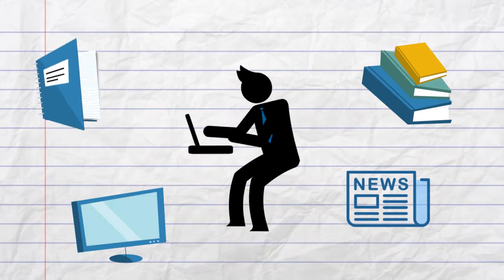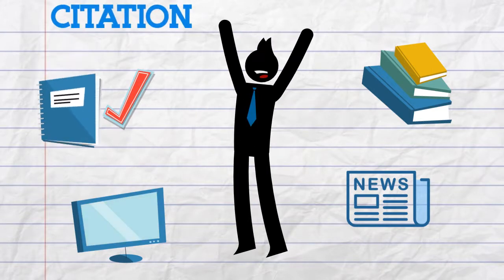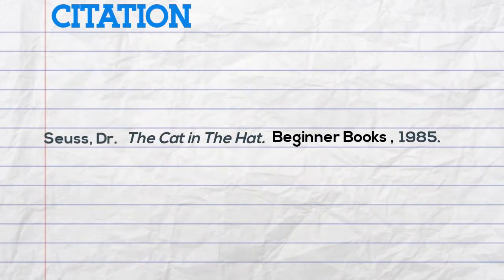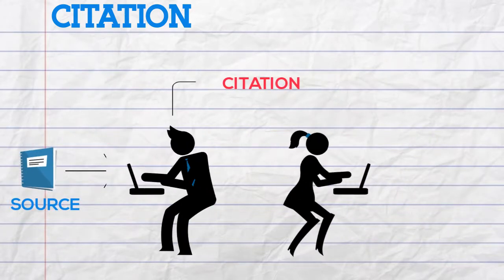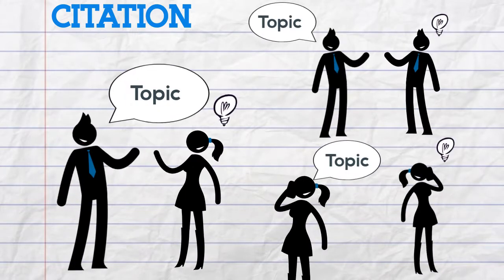Once you've found a source you want to use, you'll need to create a citation, which is a standardized way of listing the important information about a source, so others can easily find it to see the larger conversation about your topic.